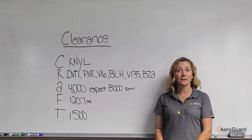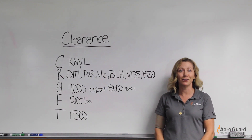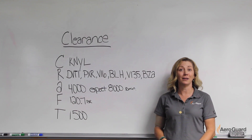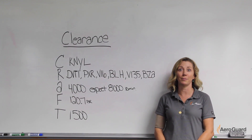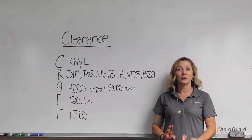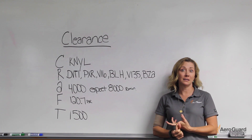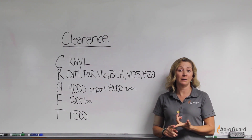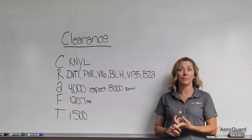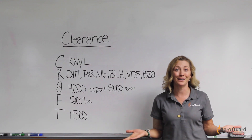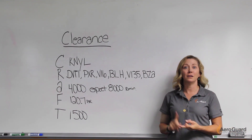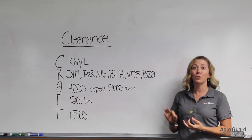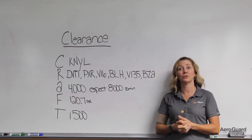If you're in VMC, you can see traffic and terrain — you just need to get down and land as soon as practical. However, if you're in IMC conditions, the situation is much more complex. You've squawked 7600 to let ATC know you can't respond, and you can't see because you're in IMC. So you need to fly the route, pick an altitude, and determine where to fly to shoot the approach from.